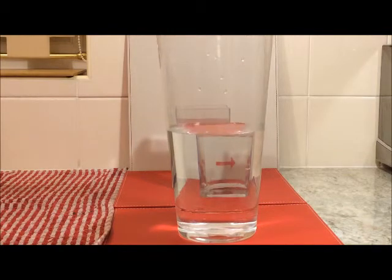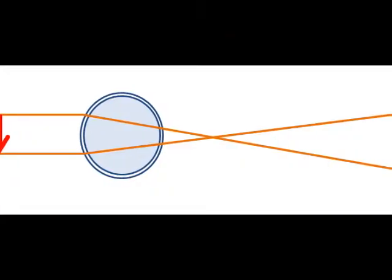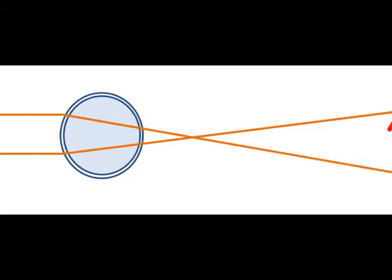If you know the refractive index of your material, it means you can predict which way the light will travel as it goes from one material to another.